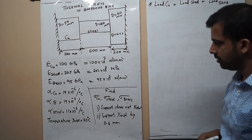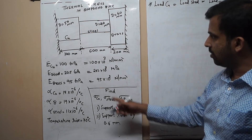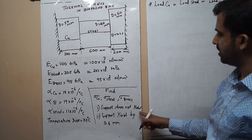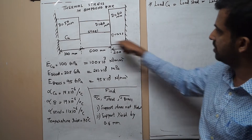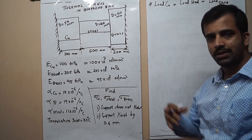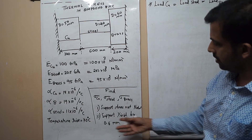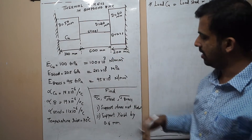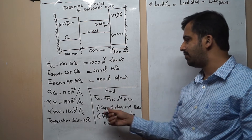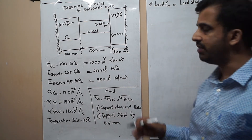We need to calculate the thermal stress in copper, steel, and brass for two sub-cases. Case one: the supports do not yield — no deformation at the fixed ends. Case two: the supports yield by 0.6 mm under thermal loading.